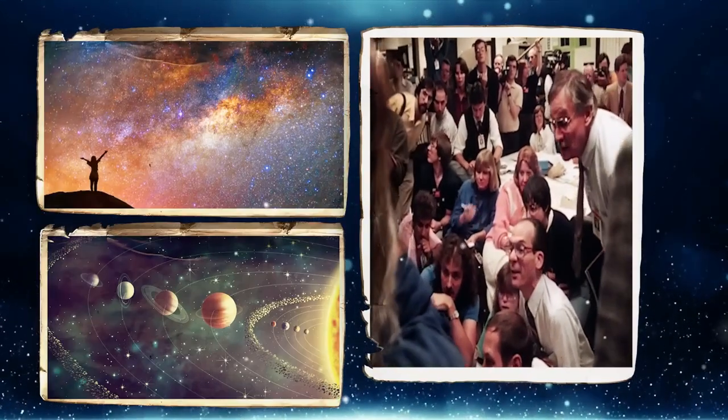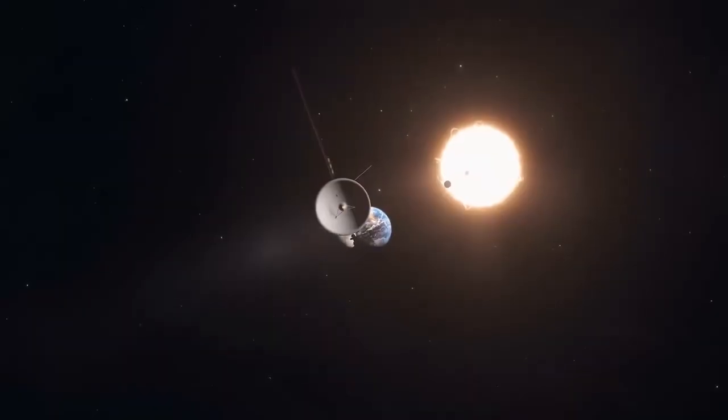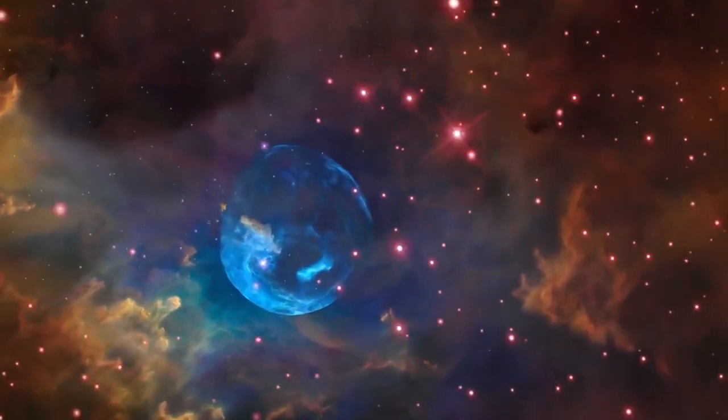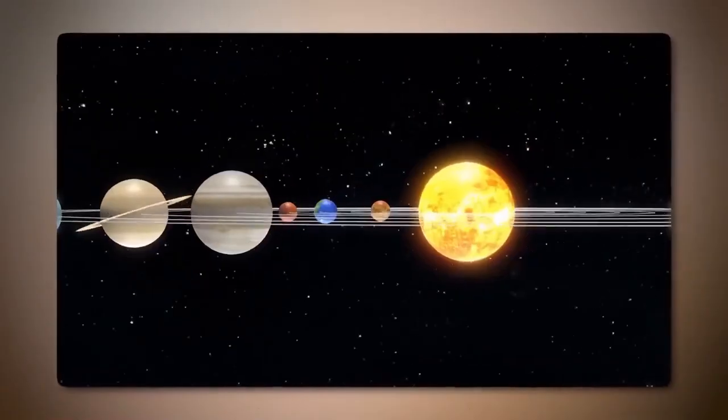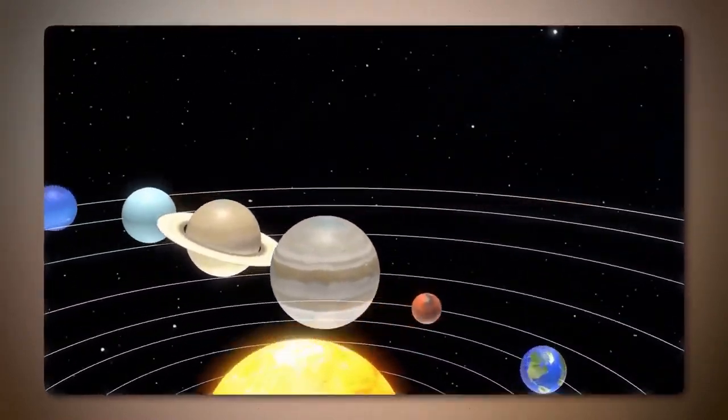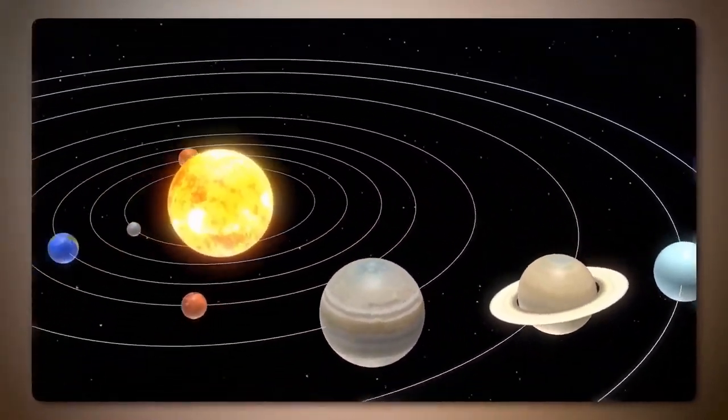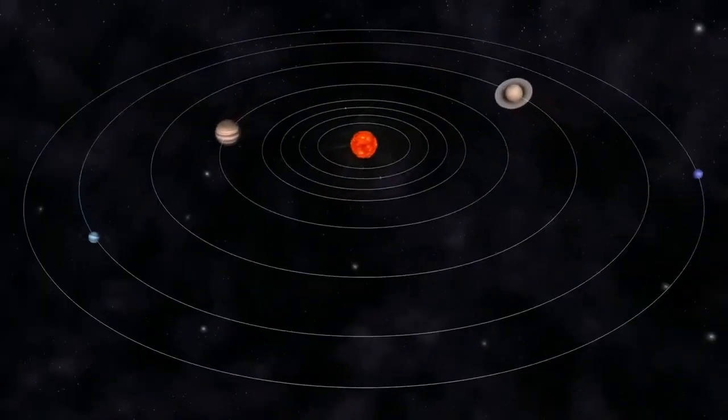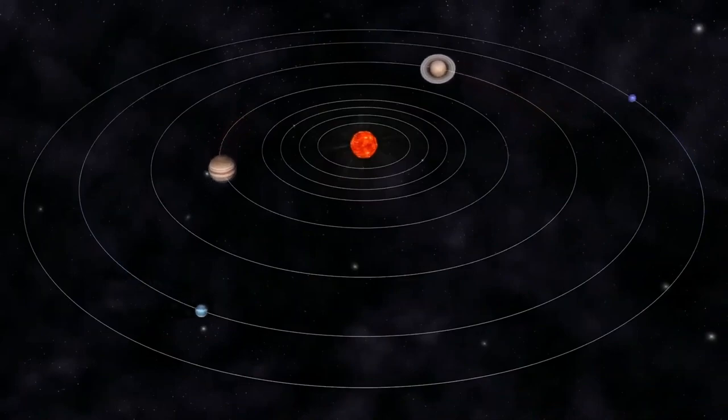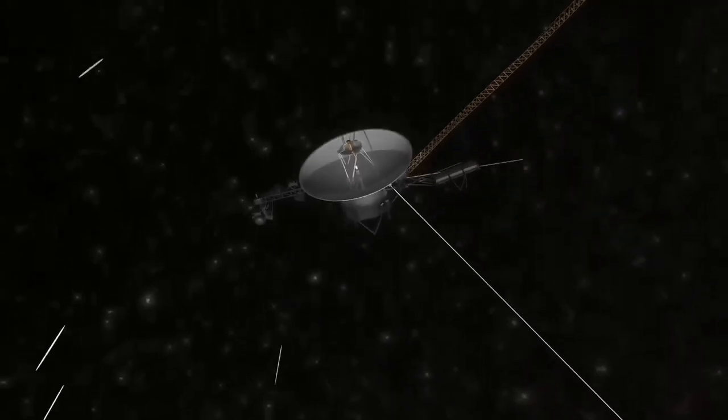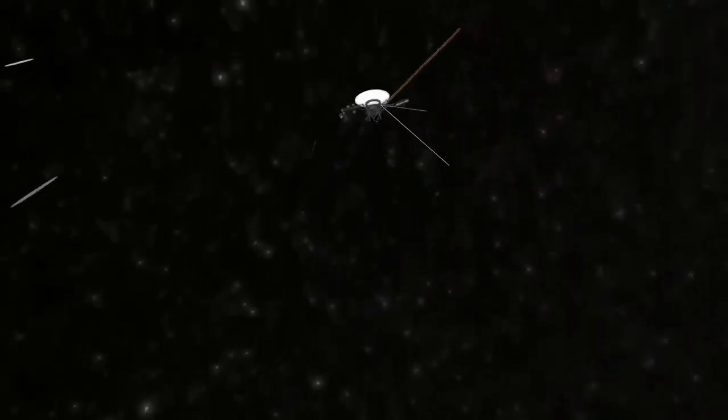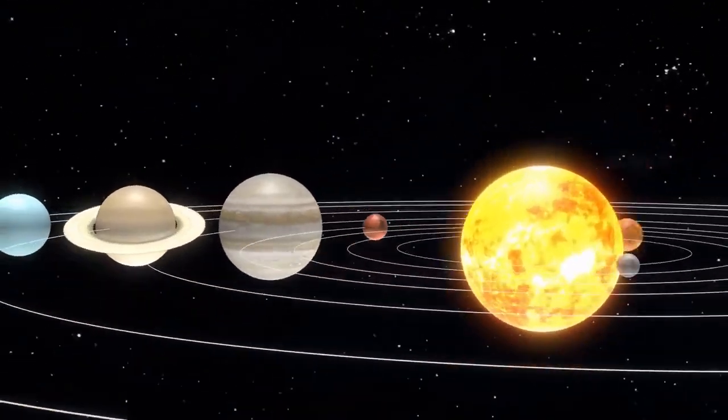On September 5, 1977, NASA's Voyager 1 spacecraft launched from Cape Canaveral, Florida, aboard a Titan-Centaur rocket, just weeks after Voyager 2's launch on August 20. Originally designed for a five-year mission to study the outer planets, these resilient probes have surpassed all expectations, continuing to send data back to Earth more than 44 years later as they venture into interstellar space.